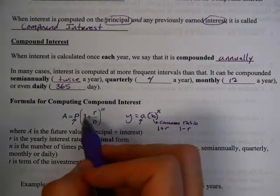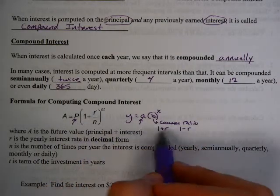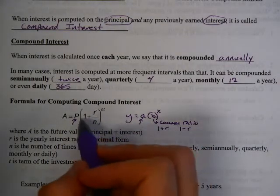Now, in this case, notice how we have 1 plus r over n. It's a similar idea, 1 plus the rate. This is going to be our B.